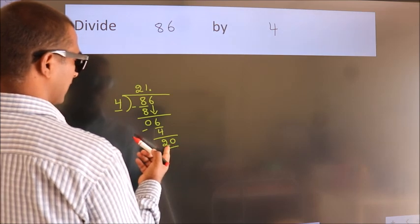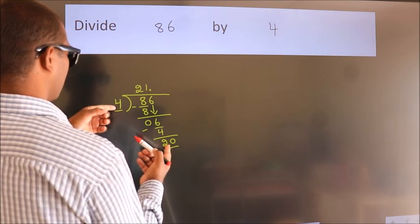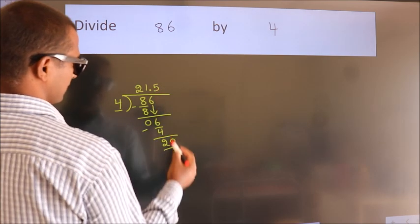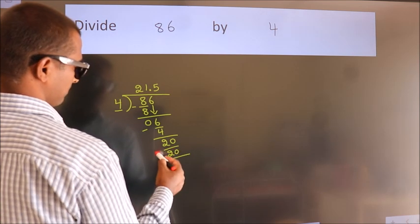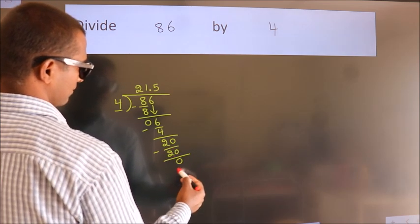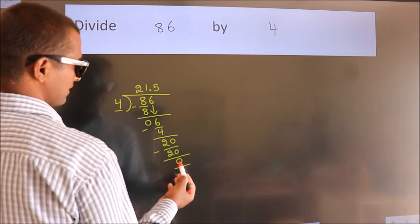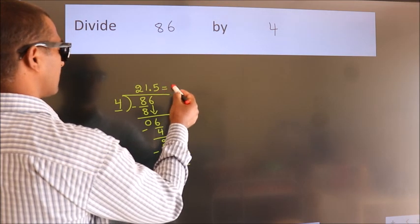When do we get 20 in the 4 table? 4 5's 20. Now we subtract. We get 0. We got remainder 0. So this is our quotient.